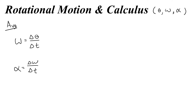What if you don't want an average? What if you don't want to know what the angular velocity is on average from 0 to 10 seconds, but rather what the angular velocity is at 5 seconds? When we ask those kinds of questions we're asking about instantaneous values, and the instantaneous values are the derivatives. So the instantaneous angular velocity is not the finite change in theta over a change in time, but the infinitely small change in theta over the infinitely small change in time — which means we take the derivative to find it.